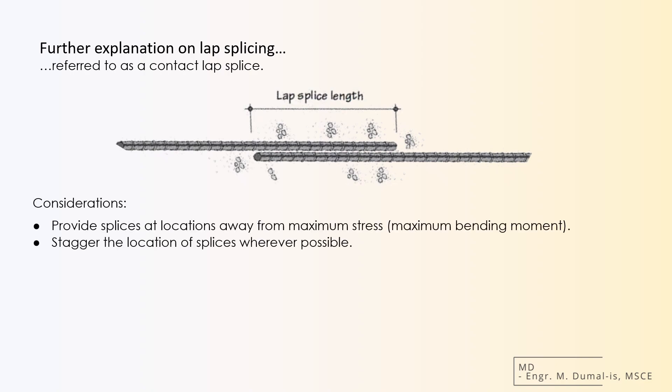In general, the following should be considered when specifying lap splices. First, provide splices at locations away from maximum stress or maximum bending moment. And second, stagger the location of splices wherever possible.